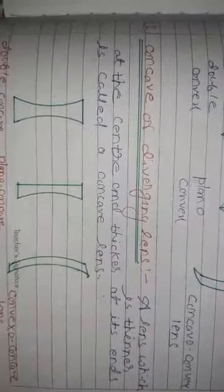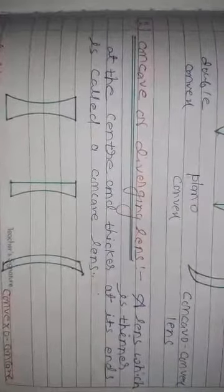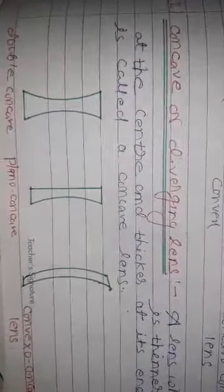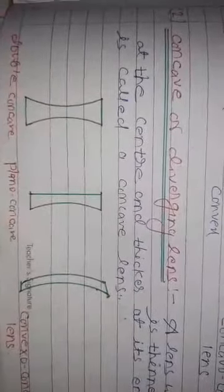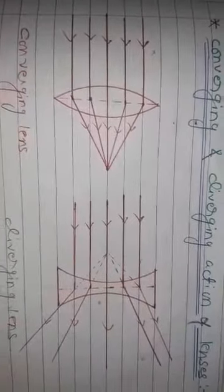The second type is the concave lens, also called the diverging lens. A lens which is thin at the center and thicker at its ends is called the concave lens. These are also of three types: double concave, plano-concave, and convexo-concave. In double concave, both spherical surfaces are concave. In plano-concave, one surface is plane and another is concave. In convexo-concave, one surface is convex and another is concave.